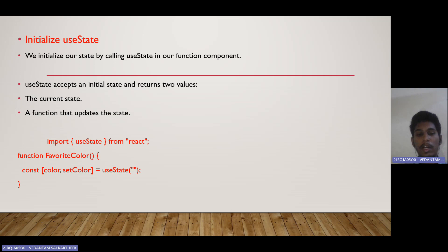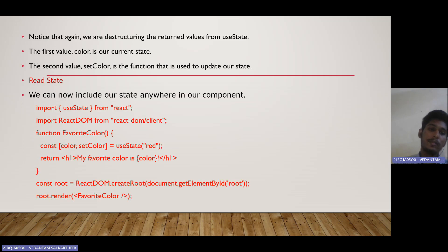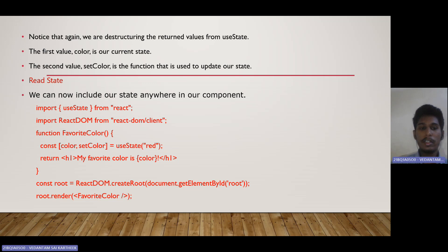The useState function takes an attribute which is the initial state for the color. Here it is set to null, which is an empty string. The first value, color, is our current state, and the second value, setColor, is the function used to update our state.